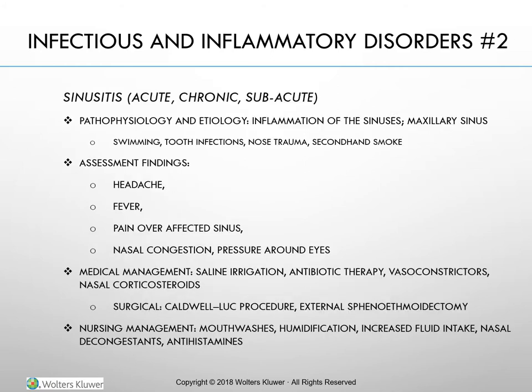Sinusitis, also known as rhinosinusitis, is inflammation of the sinuses. It may be classified according to its duration. Acute sinusitis generally lasts less than four weeks. Subacute sinusitis does not get better with initial treatment and generally lasts four to eight weeks. Chronic sinusitis occurs with repeated acute infections or inadequately treated infections and can last more than 12 weeks. Recurrent sinusitis refers to three or more episodes in one year.